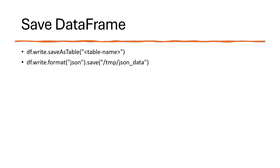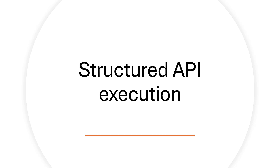To save a DataFrame, we can either save it as a table or as a file. To save as a table, we call write.saveAsTable() and provide the table name. To save as a file, we specify the format — for example JSON — and call .save() with the output location. The DataFrame will be written to that location in the specified format. We've now covered what a DataFrame is and the basic operations you can perform on it.